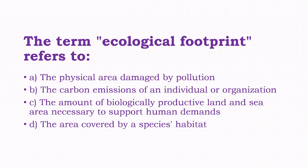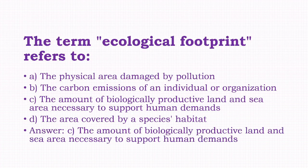The term ecological footprint refers to: the physical area damaged by pollution, the carbon emissions of an individual or organization, the amount of biologically productive land and sea area necessary to support human demands, the area covered by a species' habitat. The answer is option C, that is the amount of biologically productive land and sea area necessary to support human demands.